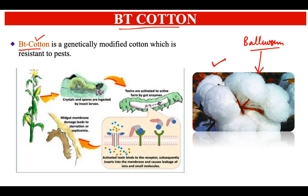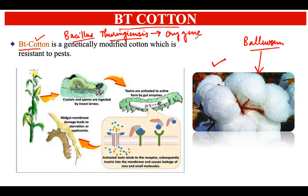So how were scientists able to produce this Bt cotton? There is a particular bacteria called Bacillus thuringiensis, and this bacteria has one particular gene known as the cry gene, which is also known as the Bt gene. When this Bt gene is transcribed and translated, the product formed is known as the cry protein, also known as the Bt protein.